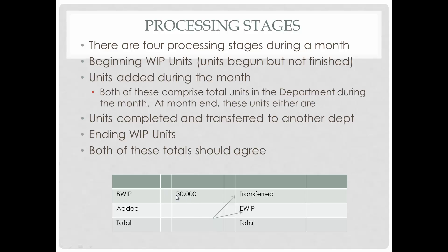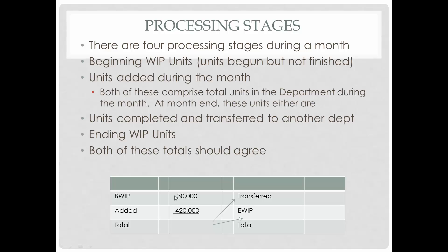Our beginning work in process inventory was 30,000 units. We added 420,000 units, so total units available for production were 450,000. Of which, 370,000 were transferred out. That means ending work in process has to be 80,000 — because if you take 450,000 and subtract what was transferred out, the remainder is ending work in process. Everything available for the month of April either wound up being transferred out or is in ending work in process.